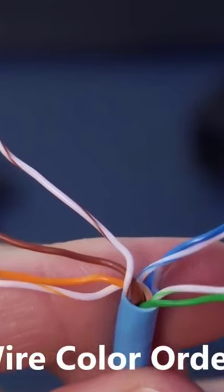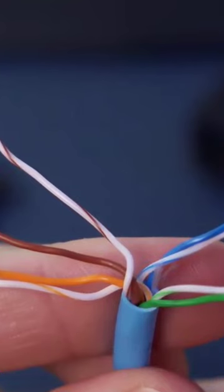Going from top to bottom is brown white, brown, orange, orange white. And on the right side going from top to bottom is blue, white blue, white green, and green.